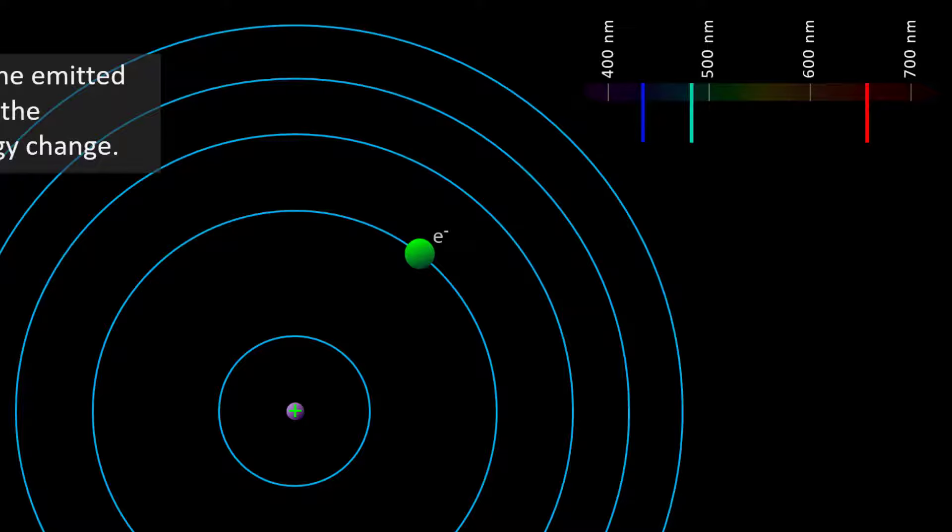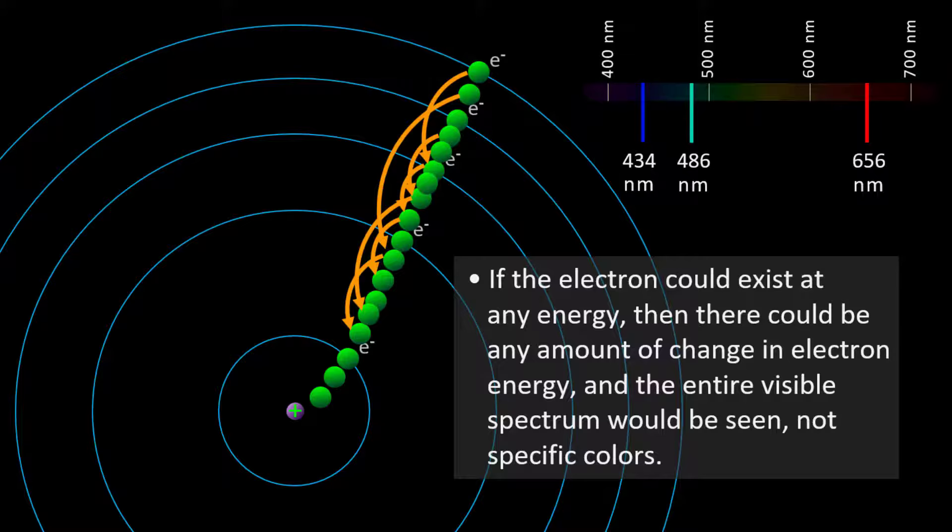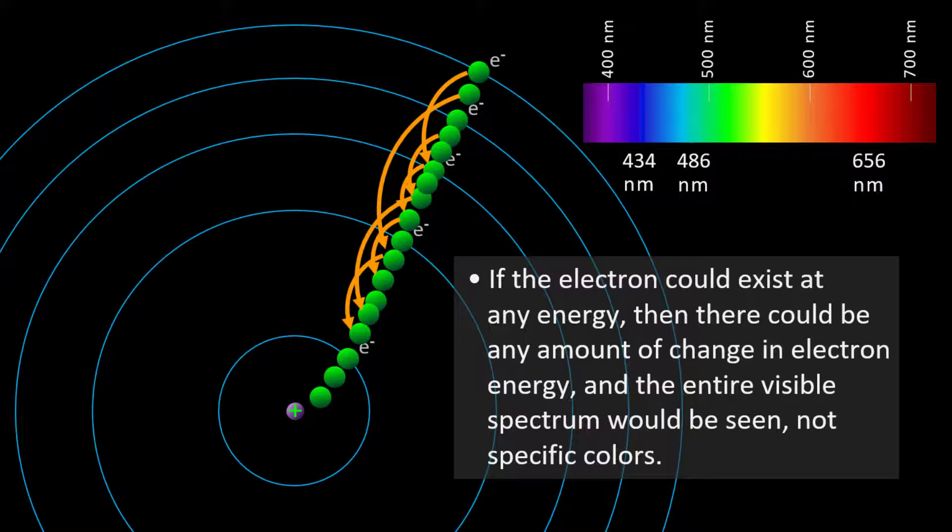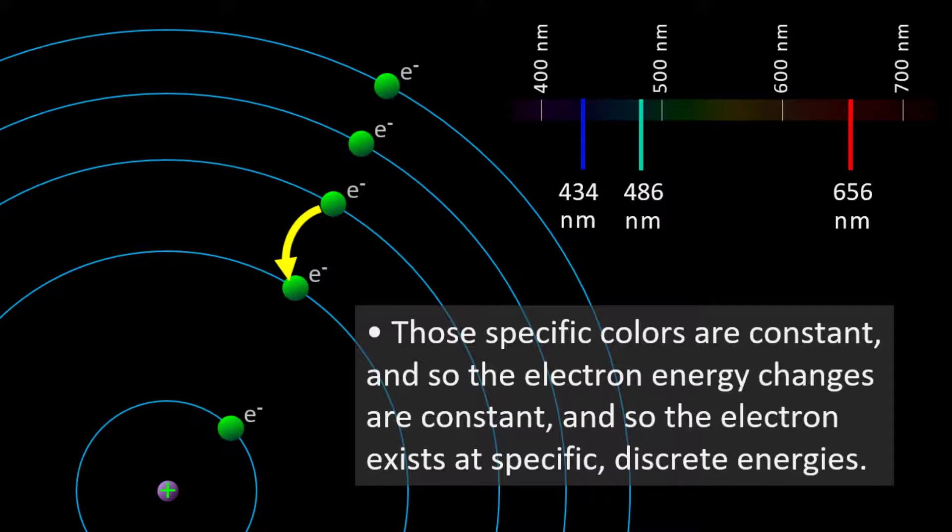Notice that in the transition the electron does not exist in between those allowed energies. The electron can only exist at discrete allowed energies. If the electron could exist at any energy, then there would be any amount of change in electron energy, which would result in emitting a large spectrum of colors, a continuous rainbow. But only specific colors are seen, and those specific colors are constant, and so the electron changes are constant, and so the electron exists at specific discrete energies.